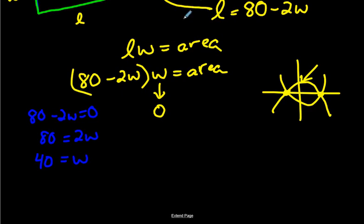So we now know that this W, in order for this to become zero, this would be 40. And the other zero would be zero.